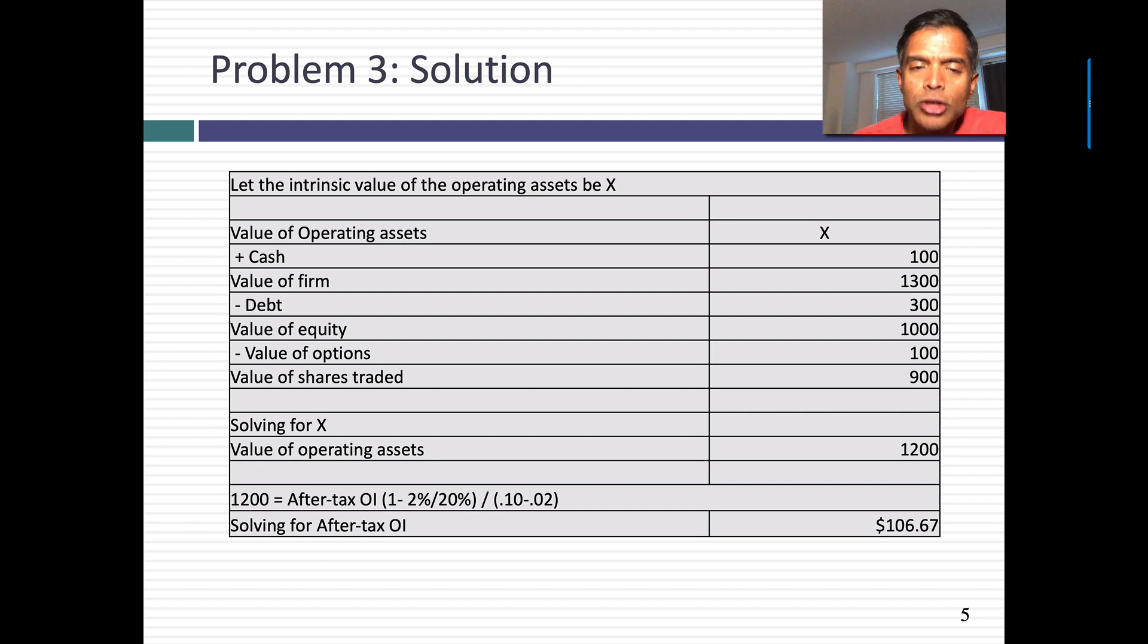Let the value of operating assets be X. To get to the value of equity, here's what you would normally do. You'd take the X, you'd add the cash, which we know. You'd subtract out the debt. And then you'd subtract out the value of options to get to the value of the shares traded. So basically, I started with the bottom of this table and built up. I knew that the value of the shares traded was $900 million. How do I know that? It's $9 per share times 100 million. Then I started working backwards up the graph. I knew the value of the options because that was given as well, $100 million. $900 plus $100 gives me $1 billion for the value of equity. I knew the value of the debt. I knew the value of the cash. And you solve for X. And it's not a complicated algebra problem. Just one equation and one unknown. You come up with a value of operating assets of $1,200.